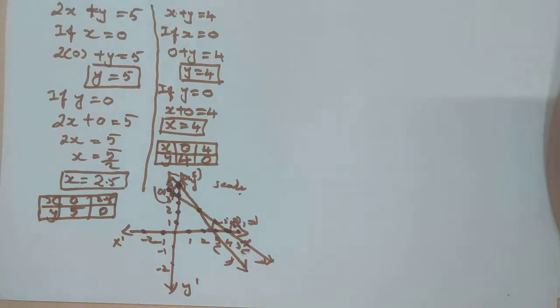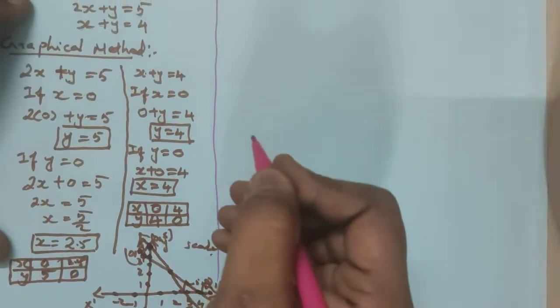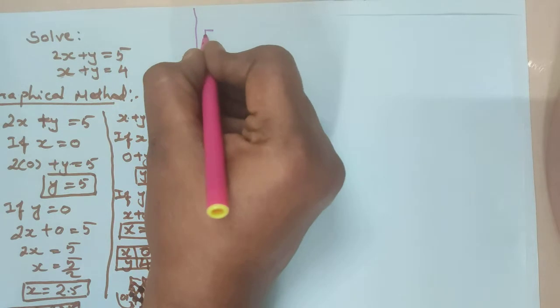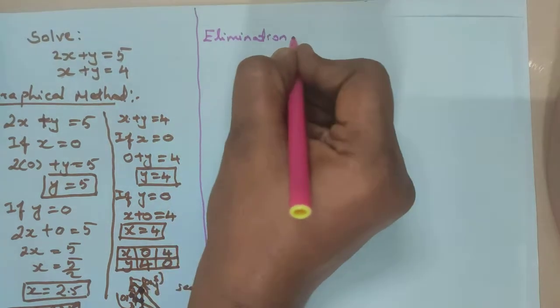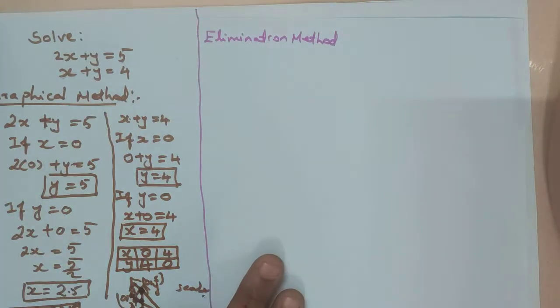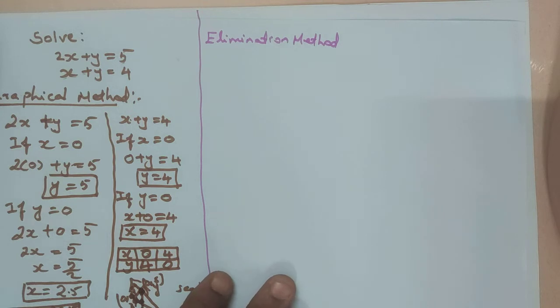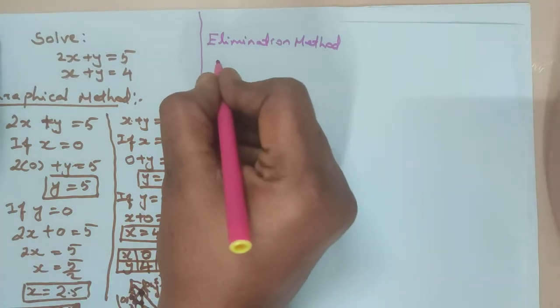Next, I will solve by elimination method. In your board exam, if they ask elimination method, you should solve by elimination method. Even though the answer is correct, if you did it by another method, they won't give the mark. Because in the question paper, if they mention elimination method, you should follow that method.